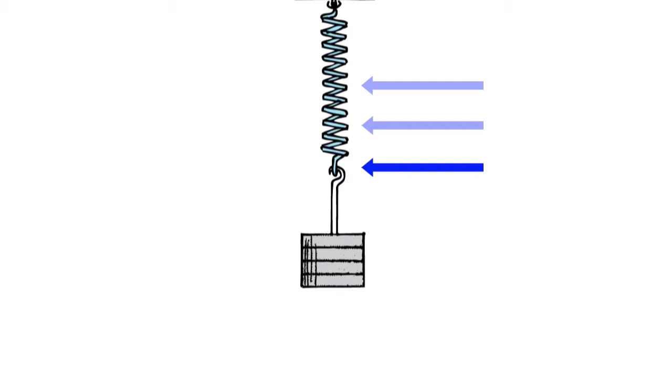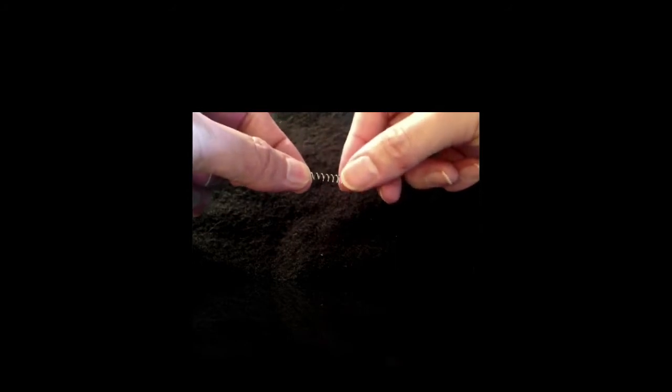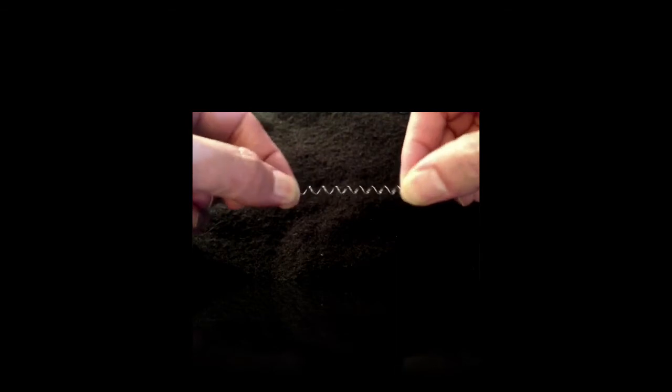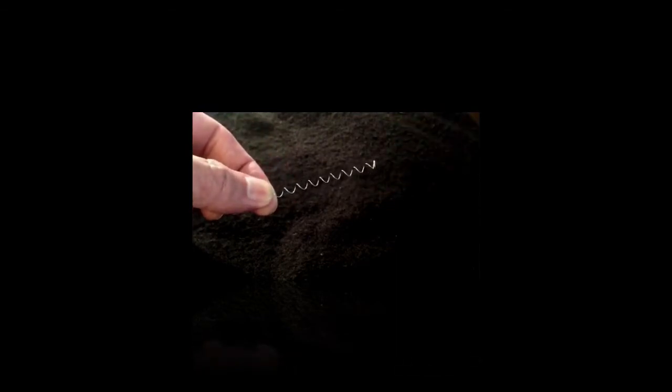A spring relies on the inherent elasticity of the metal from which it is made. All metals have their limit, the point at which the metal deforms. That's why there's a limit to how far a spring can be stretched.